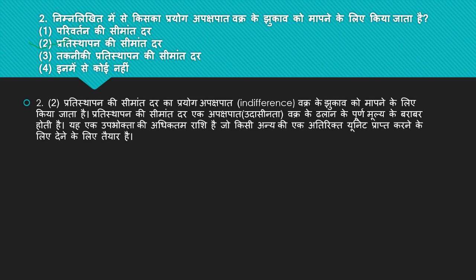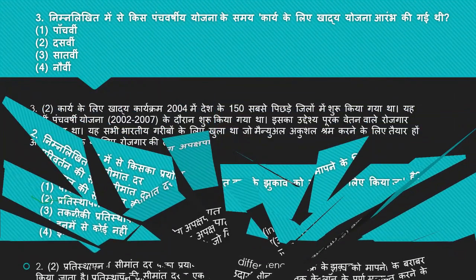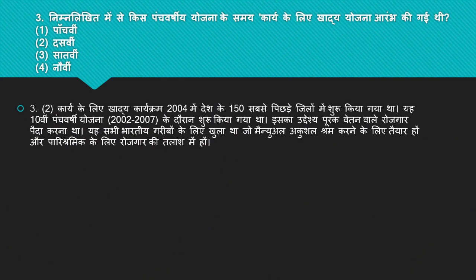Badhte hain next question ki taraf. Nimlikhit mein se kis panch varshiya yojana ke samaykarik ke liye Khadiya Yojana shuru ki gayi thi? 4 options hain: 5th, 10th, 7th, 9th. Iska right answer hai number two — 10th. Khadiya Yojana 2004 mein desh ke 150 sabse pichde zilon mein shuru ki gayi thi. Yeh 10th Panch Varshiya Yojana (2002–2007) ke dauran shuru ki gayi thi. Iska uddeshya poorna vetanwaala rozgaar pradan karna tha. Yeh sabhi Bhaaratiyon ke liye khuli thi jo manual akushal shram ke liye taiyaar aur paarishramik ke liye rozgaar ki talaash mein ho.